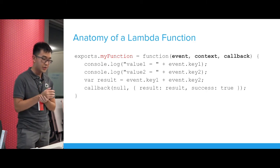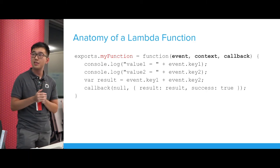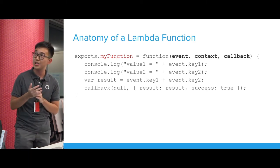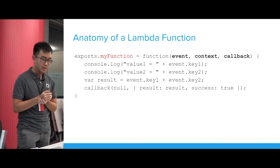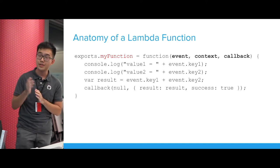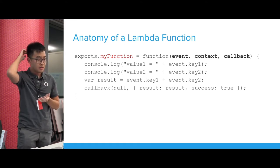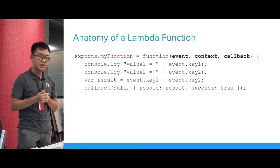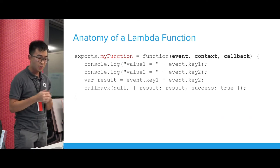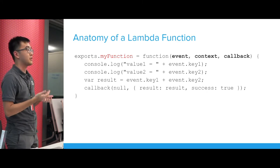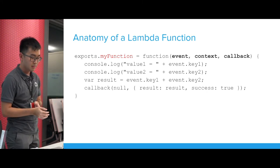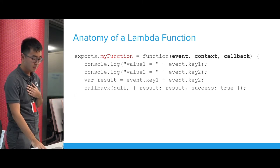This is what a Node.js Lambda function looks like. It's just a function that takes a few parameters: the event, which is the input to the function; the context, used for metadata like checking how long the function has been running; and the callback, which is a function you use to return results back to whatever is calling it. It's just a function.